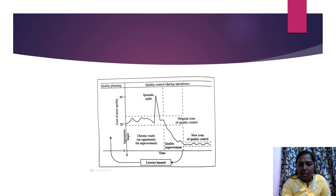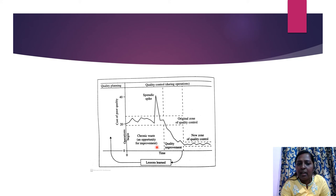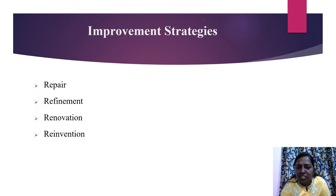Here in this diagram, the sporadic spike can be identified and determined by the quality control, whereas the chronic waste can be done by the improvement process. We can learn from this diagram that the goals can be established and learned through the quality planning as the initial process. The improvement strategies are repair, refinement, renovation, and reinvention.